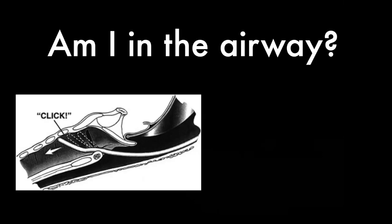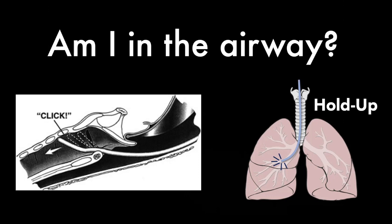The bougie is also useful when you can't see the cords but can see some landmarks, because you can use it to confirm you're in the airway. There are two ways to confirm this: first, feel the clicks of the tracheal rings as you advance; second, use bougie hold-up — gently insert the bougie until it stops. If it holds up with plenty of bougie still coming out of the mouth, you're in the airway. If you can bury it to the hilt, you're likely in the esophagus.